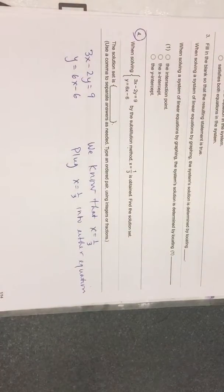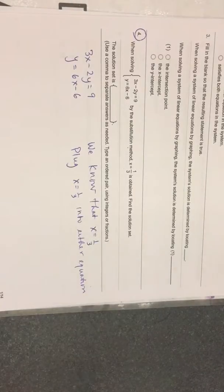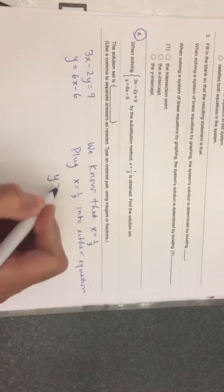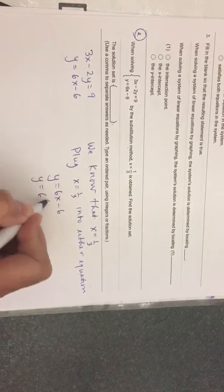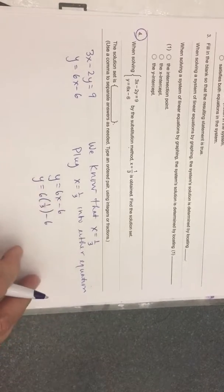I'm going to go with the second one because it's already set up. y equals 6x minus 6. This will give me y equals 6 times one-third minus 6.